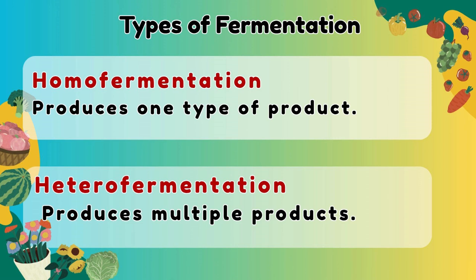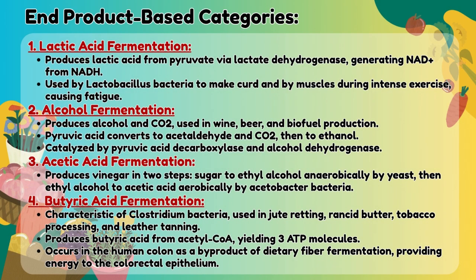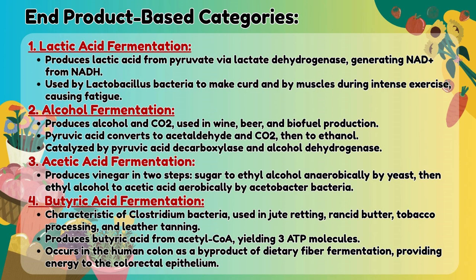Heterofermentation may also produce acetic acid. In product-based categories: lactic acid fermentation produces lactic acid from pyruvate via lactate dehydrogenase, generating NAD+ from NADH, used by Lactobacillus bacteria to make curd and by muscles during intense exercise causing fatigue. Alcohol fermentation produces alcohol and CO2, used in wine, beer, and biofuel production — pyruvate converts to acetaldehyde and CO2, then to ethanol.